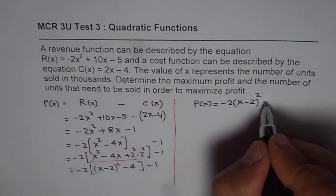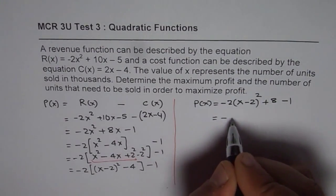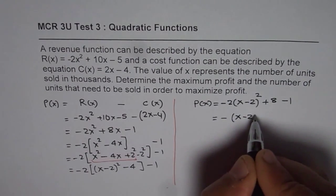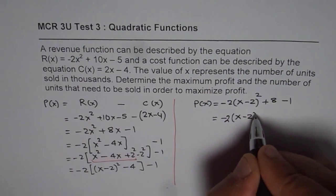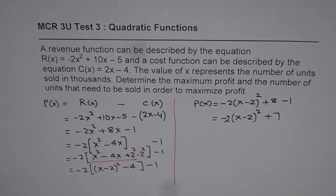Minus 2 times minus 4 will give us plus 8 minus 1. That is minus 2 times x minus 2 whole square plus 7. That gives you the profit.